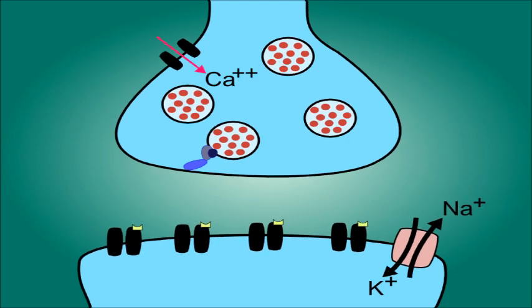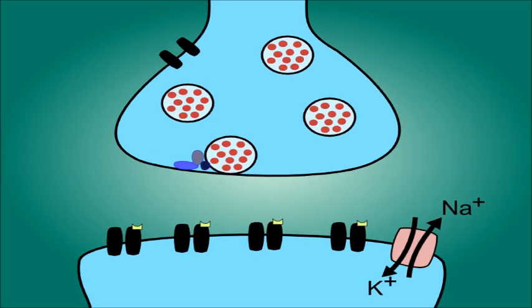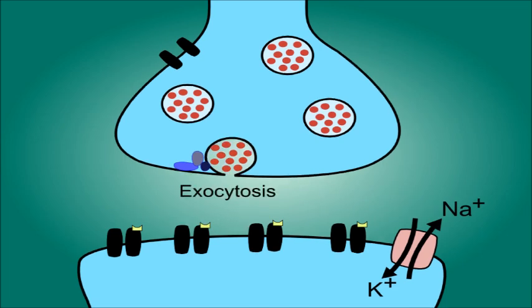Calcium will bind to the proteins and cause them to pull the vesicles closer to the phospholipid bilayer membrane, where the vesicles will fuse with the membrane and cause exocytosis.